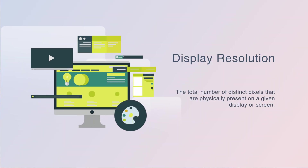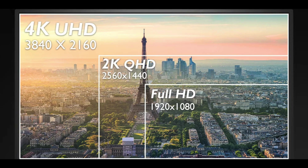Before we get into the finer details, let's understand what resolution essentially is. Simply put, it's the amount of pixels we have on any given display. The more pixels we have, the higher the resolution. Now, while there are many different types of resolutions, the most common ones you'll hear about include Full HD, Quad HD, and Ultra HD. Respectively, they're also known as 1080p, 1440p, and 4K.